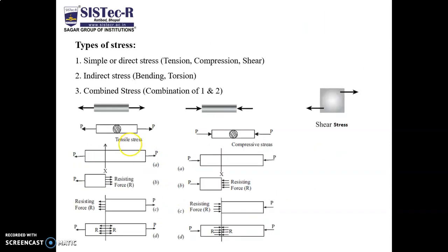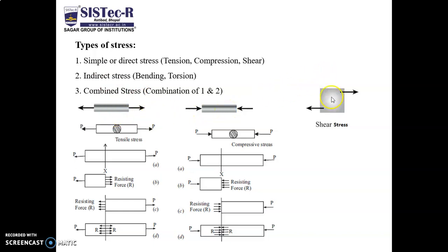There are mainly three types of stress. Simple or direct stress — that is tension, compression, and shear. Indirect stress — that is bending or torsion. And combination of the first and second, that is combined stress. If we pull a body, that is called tensile force; if we push, that is compressive. If the load is applied on the face, that is called shear stress.